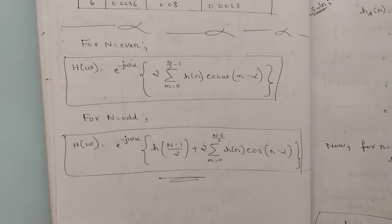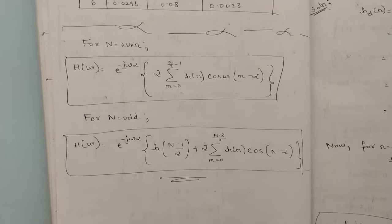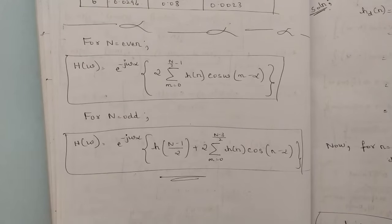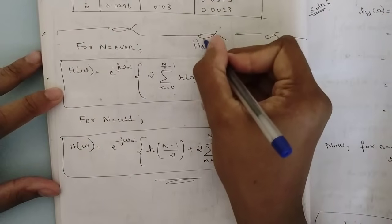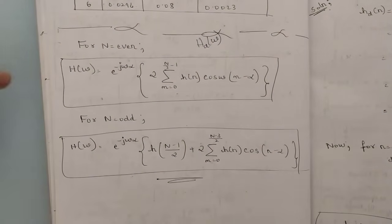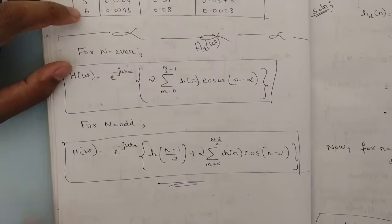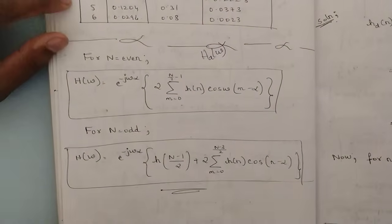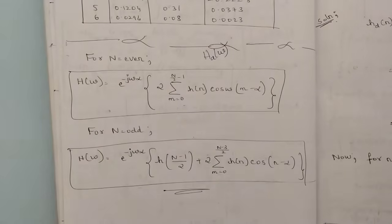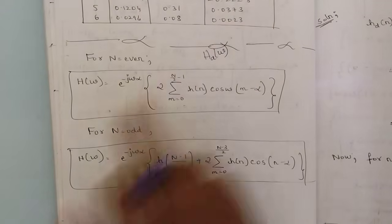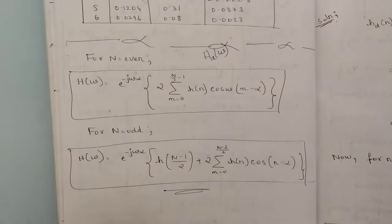Welcome to this new video. In our previous videos we discussed FIR filter design using windows for both low pass and high pass filters. We have seen many variations in the problems, including filter coefficients and desired frequency response HD(ω). Now we are going to find the actual frequency response H(ω) — that is one extra step after the window plotting, which we have not completed until now. These kinds of problems appear for 10 marks.